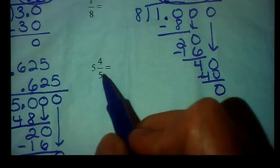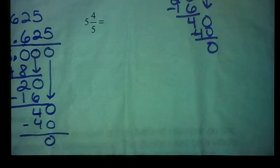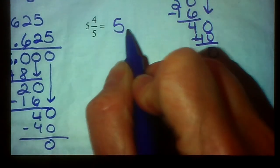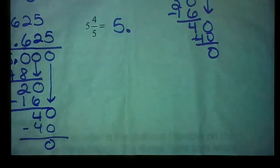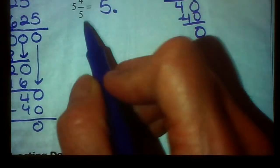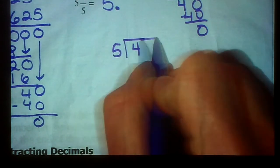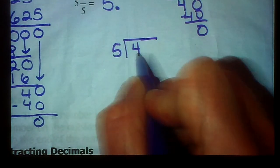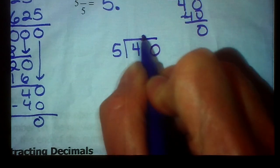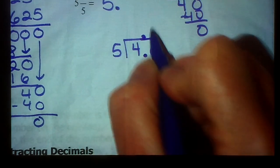All right, next example, 5 and 4/5. Again, the whole number we don't need to mess with. We're just going to write it in the front. I'm going to put a decimal point right after it. We need to convert this 4/5 into a decimal. That means 4 divided by 5. So 5 doesn't go into 4, but it goes into 40.